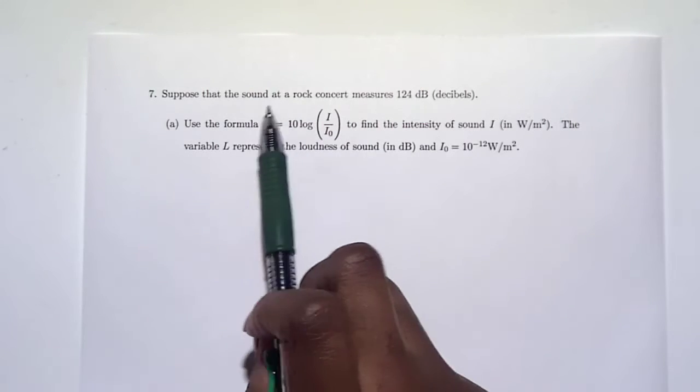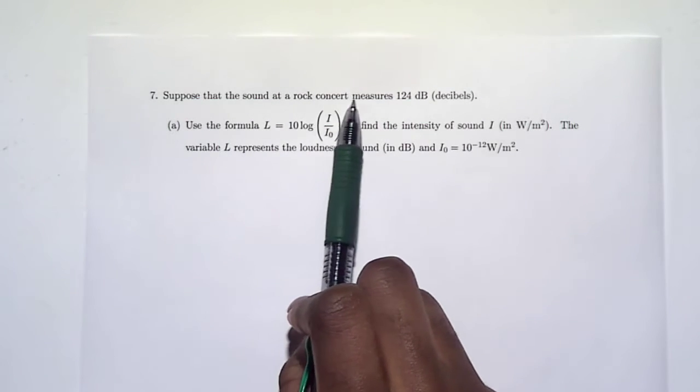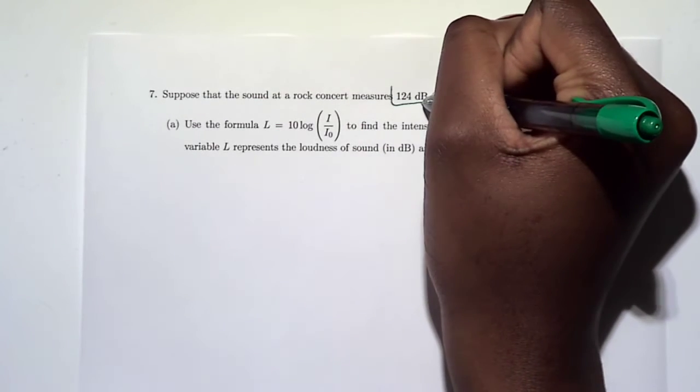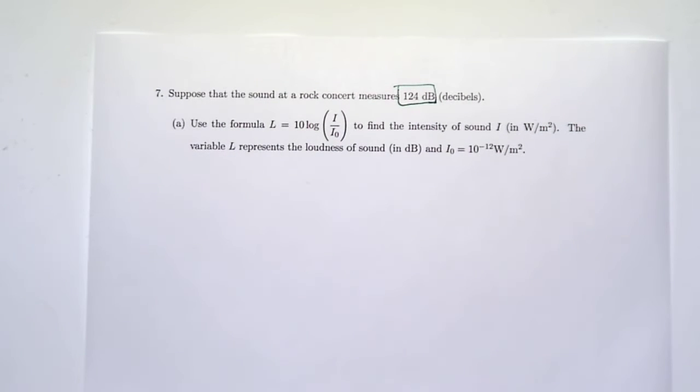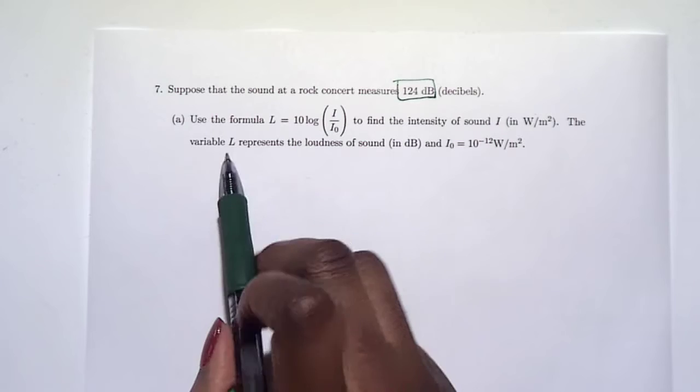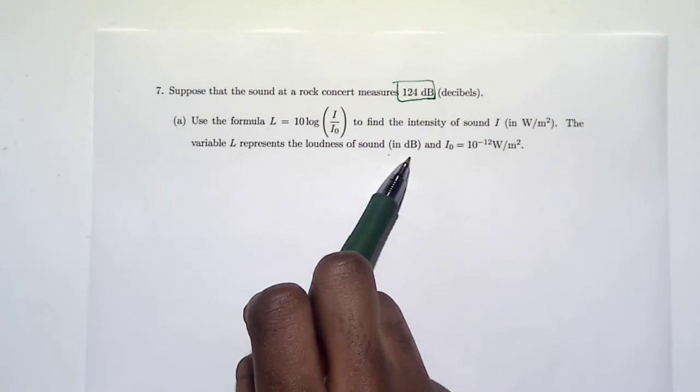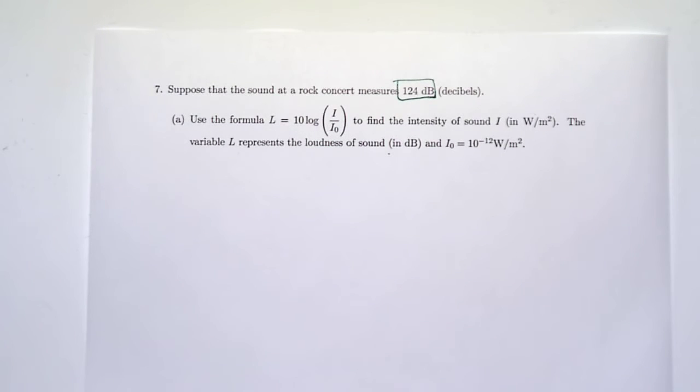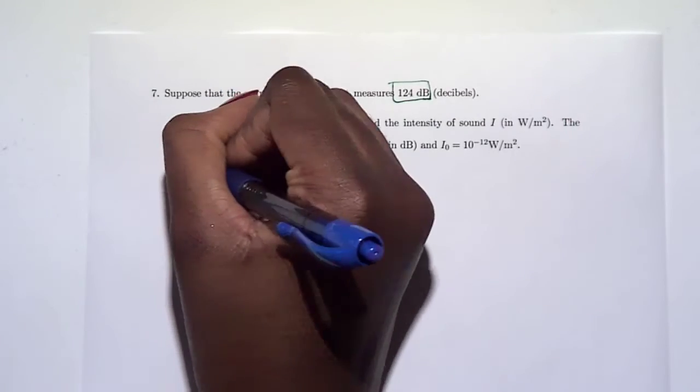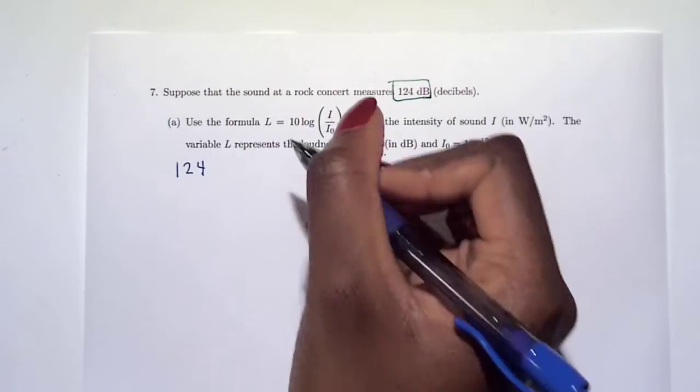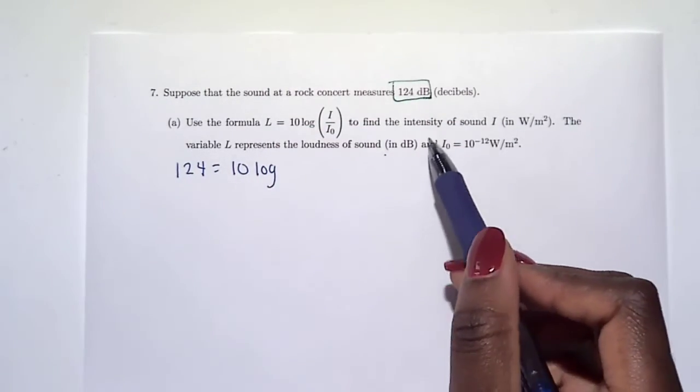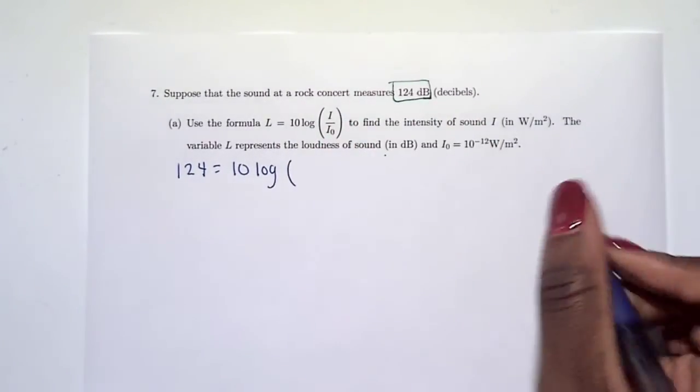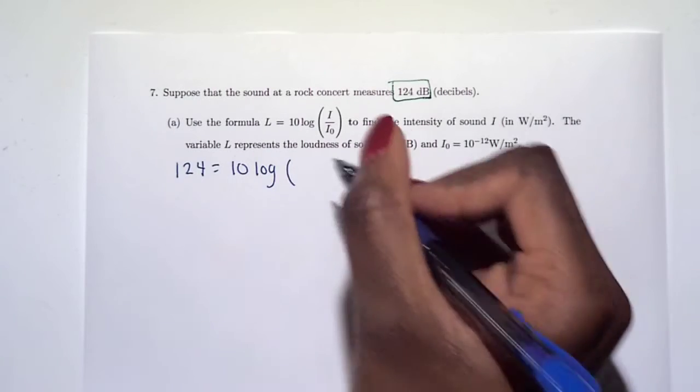Suppose the sound at a rock concert is 124 decibels. What in this formula represents decibels? It says L represents the loudness in decibels, so L is our 124. We don't know what I is, but we do know I₀ is 10 to the negative 12.